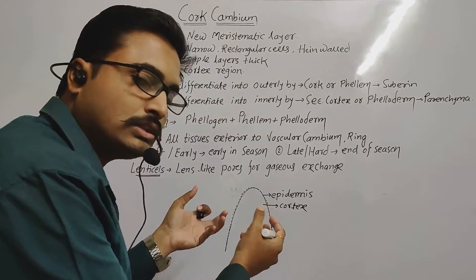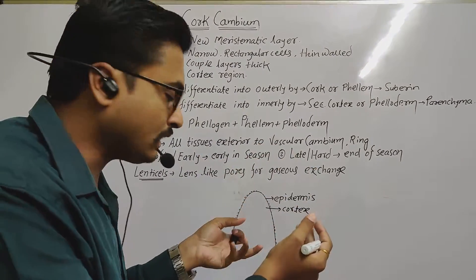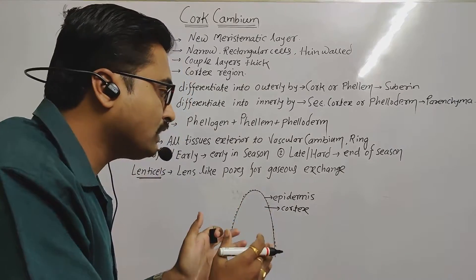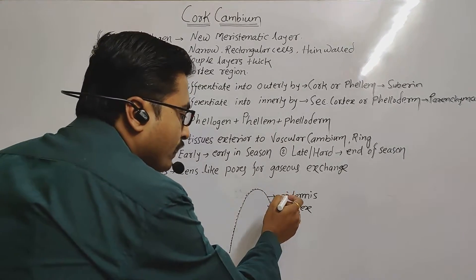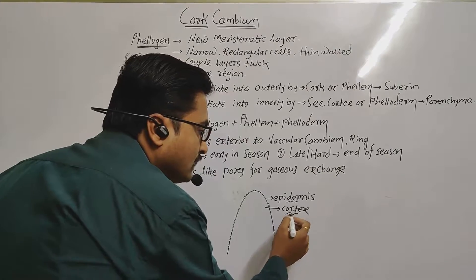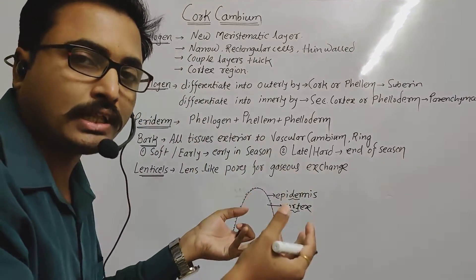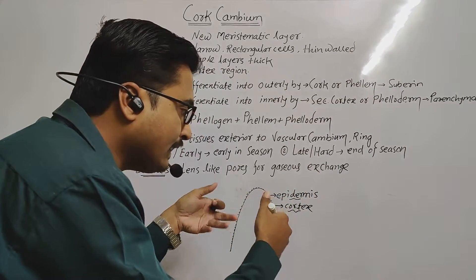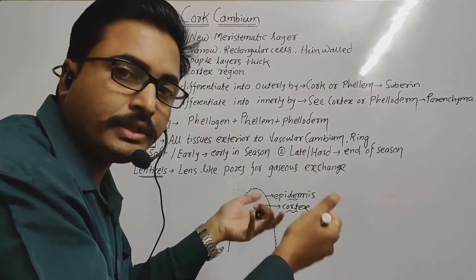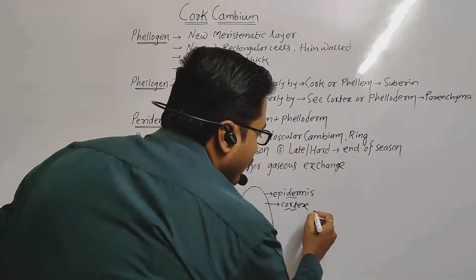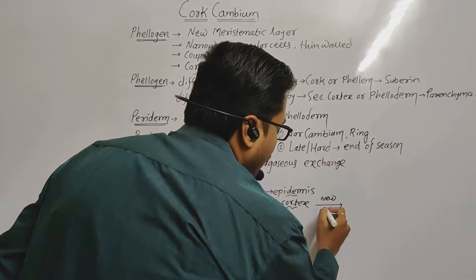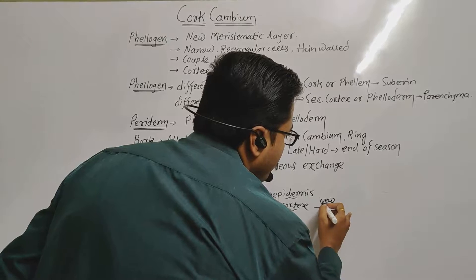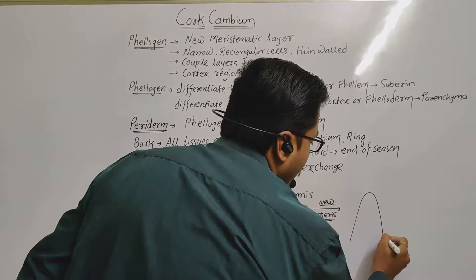At old age, when the plant's age increases and the activity of the cambium ring increases, the plant tries to change the epidermal cells and the cortical cells. These epidermal and cortical cells gradually get replaced and changed, and a new meristematic layer is formed there.